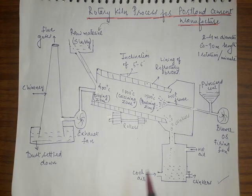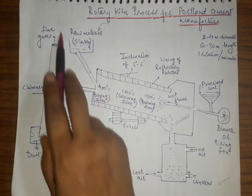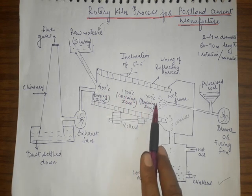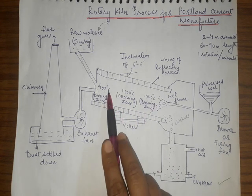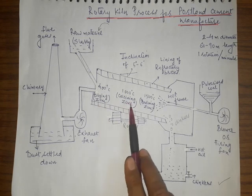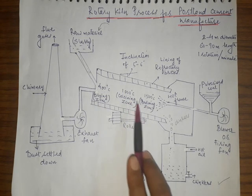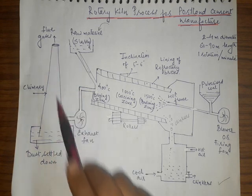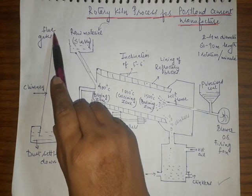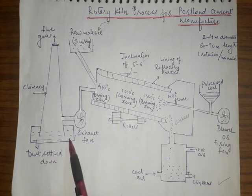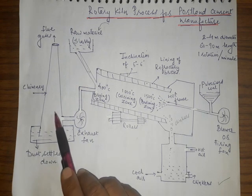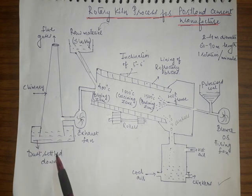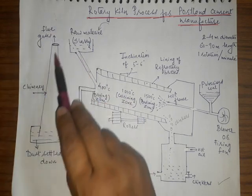The cooled clinkers are then ground — powdered — and finally mixed with gypsum, and the cement is ready for supply. The gases generated in the kiln such as moisture, carbon dioxide, or other gases are passed through an exhaust fan leading to a chimney. The chimney helps regulate pollution by settling particulate dust, and flue gases leave from the upper side of the chimney.